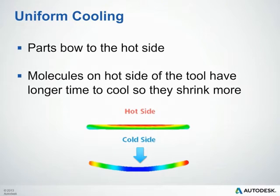We would also like to strive for uniform cooling in your parts. When cooling a part, the mold surface temperature should be uniform on both sides of the part. When the temperatures are not uniform, the molecules on the hot side have a longer time to cool, so they shrink more than on the cooler side. This essentially creates a tensile force on that warm side and makes your part bow towards the hot side, as shown in the image below.